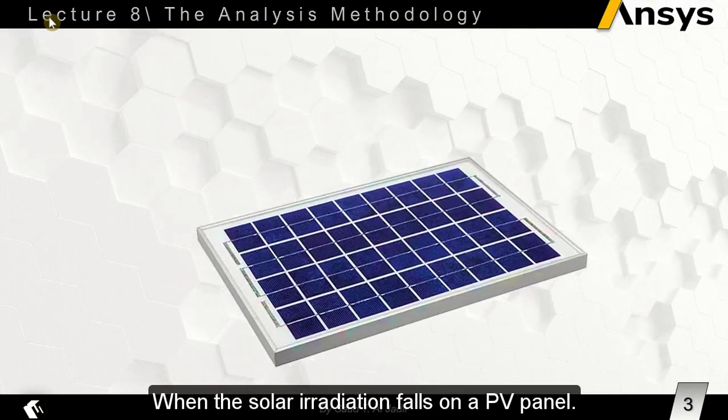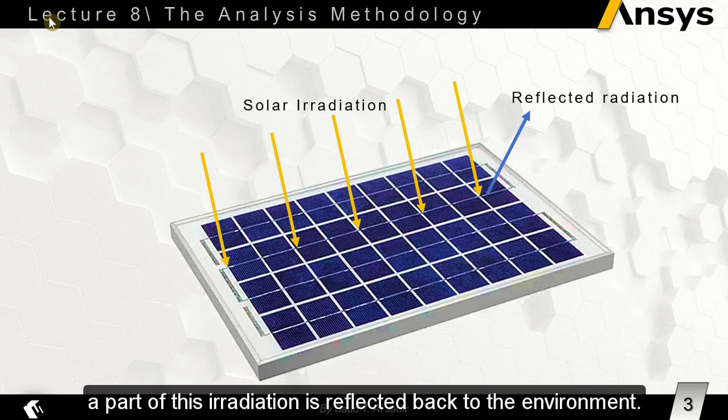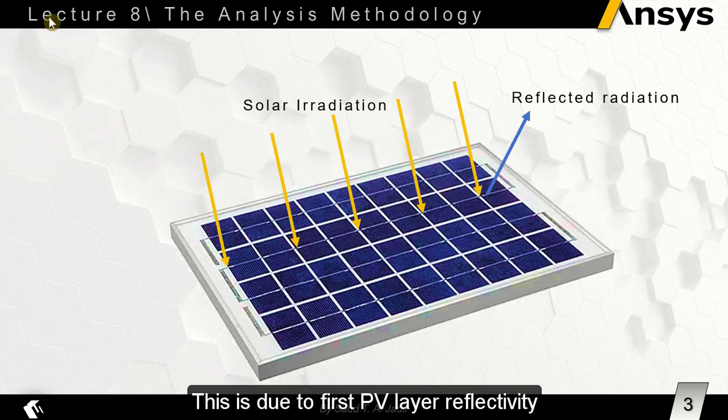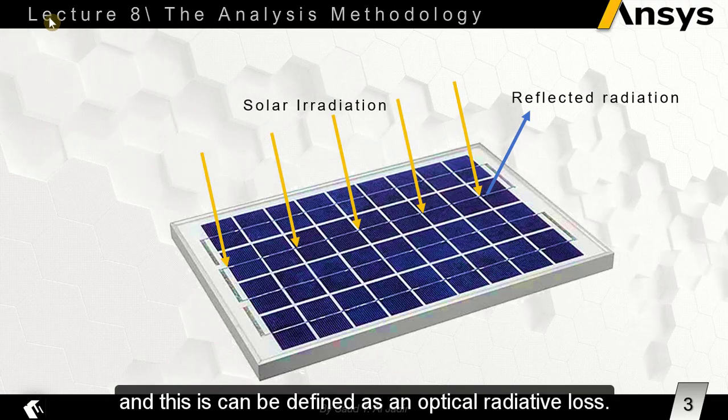When the solar irradiation falls on a PV panel, a part of this irradiation is reflected back to the environment. This is due to first PV layer reflectivity, and this can be defined as an optical radiative loss.